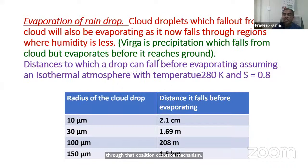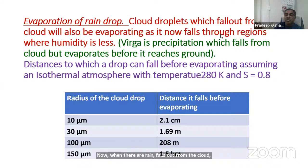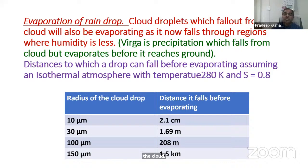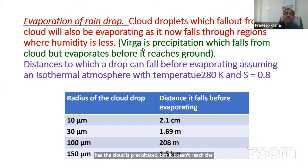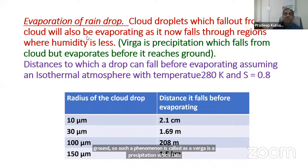When rain falls out from the cloud, it will evaporate because the air below the cloud may be subsaturated rather than supersaturated. A 150-micron drop can travel about 1.5 kilometers before completely evaporating in an isothermal atmosphere of 280 K at a saturation ratio of 0.8 (80% relative humidity). A 100-micron drop can travel only about 208 meters before it completely evaporates. This phenomenon — precipitation falling from the cloud but evaporating before it reaches the ground — is called Virga.